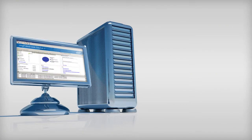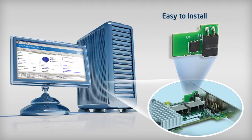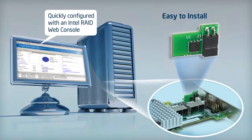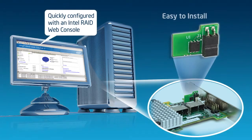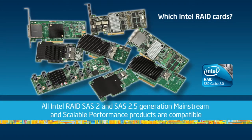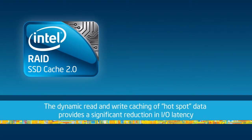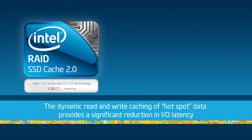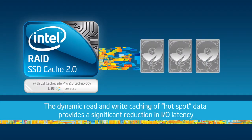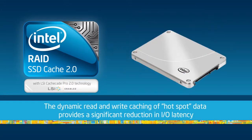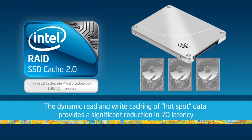With all of the performance benefits outlined, don't wait to take advantage and install Intel SSD Cache 2.0. You'll be amazed at how easy the install is and how quickly it can be configured with an Intel RAID web console. Since all Intel RAID's SAS 2 and SAS 2.5 generation mainstream and scalable performance products are compatible with Intel SSD Cache 2.0, it is a simple add-on. Leverage the strengths of both hard drives and SSD technology as Intel SSD Cache 2.0 accelerates I/O performance of existing hard disk arrays using SSDs as high-performance cache. This software is optimized for the real-world workloads of transaction-intensive applications.